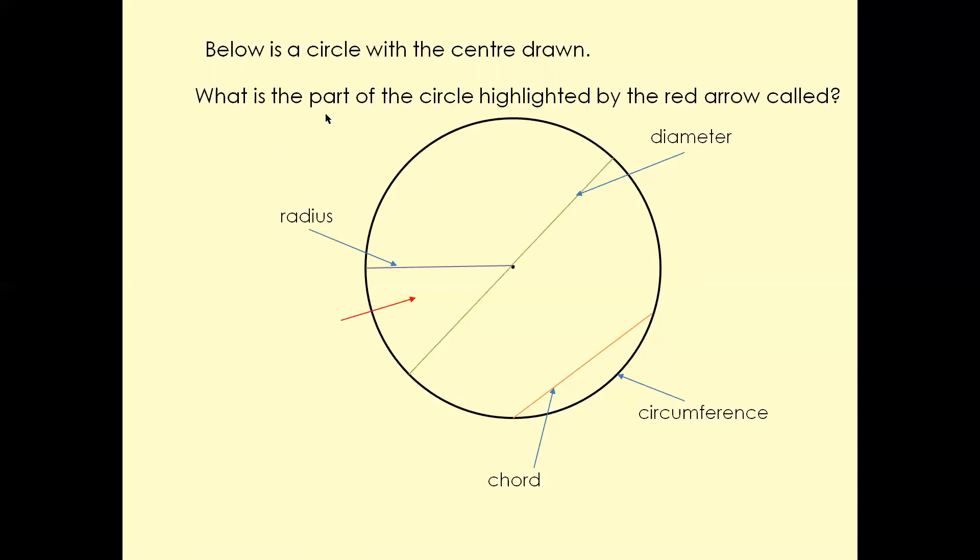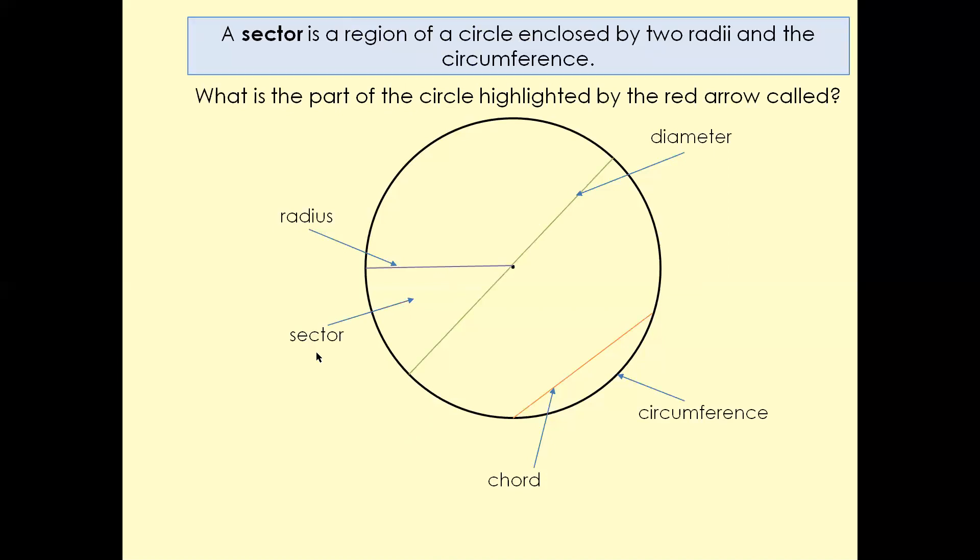Which part of the circle is highlighted by the red arrow here? The answer is a sector. A sector is a region of a circle enclosed by two radii and the circumference. That's one radius here, another radius here, and the circumference. This area is called a sector.